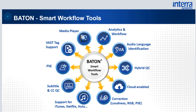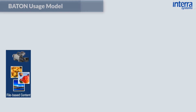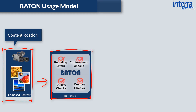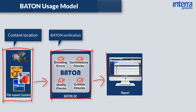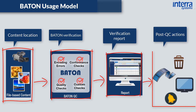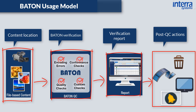Let's now look at the Bayton usage model. Bayton picks up media files from the specified content location for QC. It then verifies the media files against selected test plans or a checklist of specified parameters through an auto or manual QC process. Once verification is complete, Bayton generates a report about all errors and warnings. It then performs post-QC actions such as sending files with errors to a quarantine folder, files with no errors to the play-out folder, sending files for correction to Bayton Content Corrector (VCC), and sending alerts to concerned people about errors and warnings.